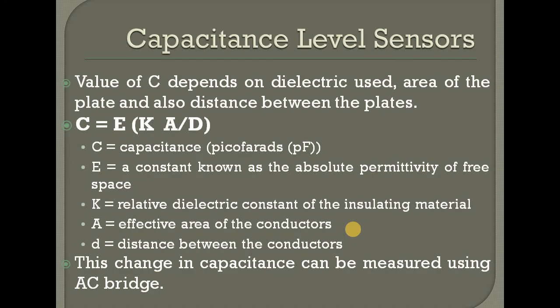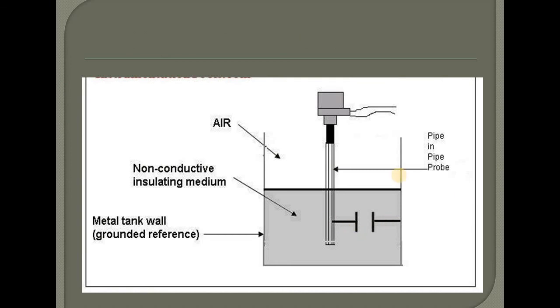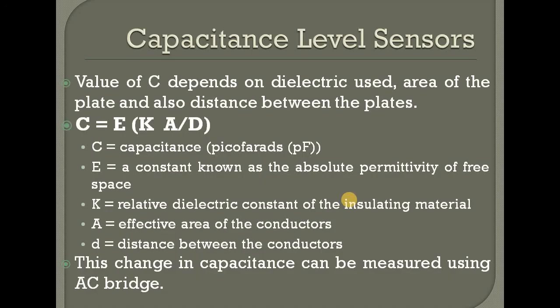The working principle formula is: C equals epsilon times k times A divided by d, where C depends on the dielectric constant (k), the area of the plates (A), and the distance between the plates (d). Capacitance changes as the fluid level changes.